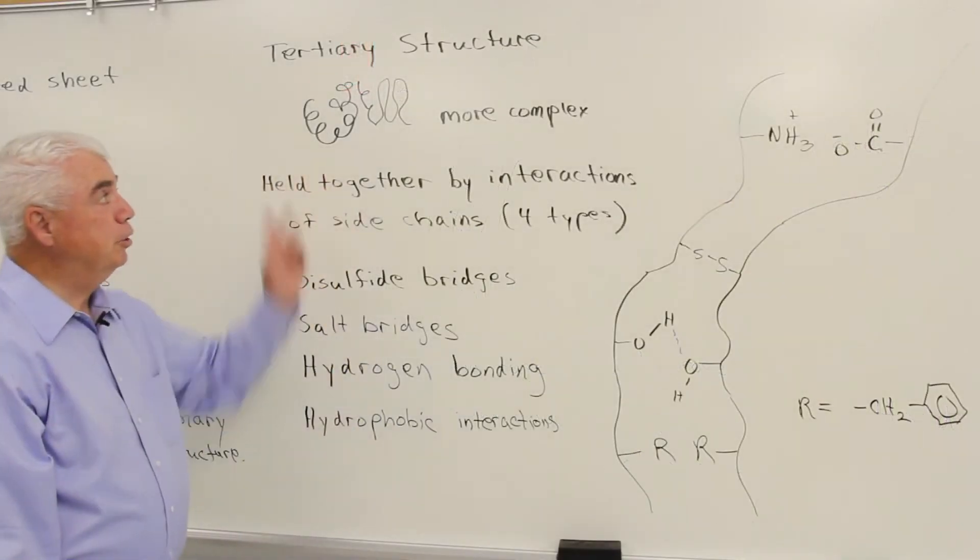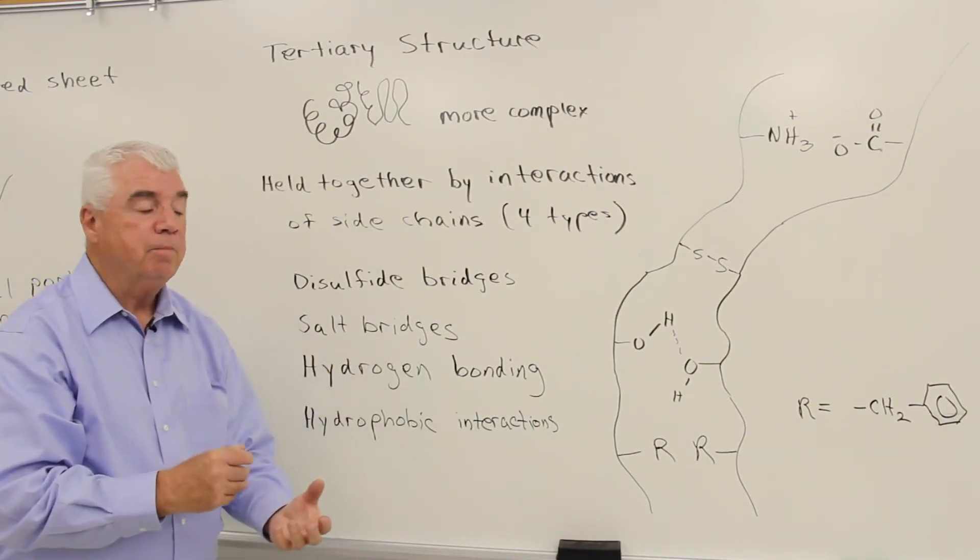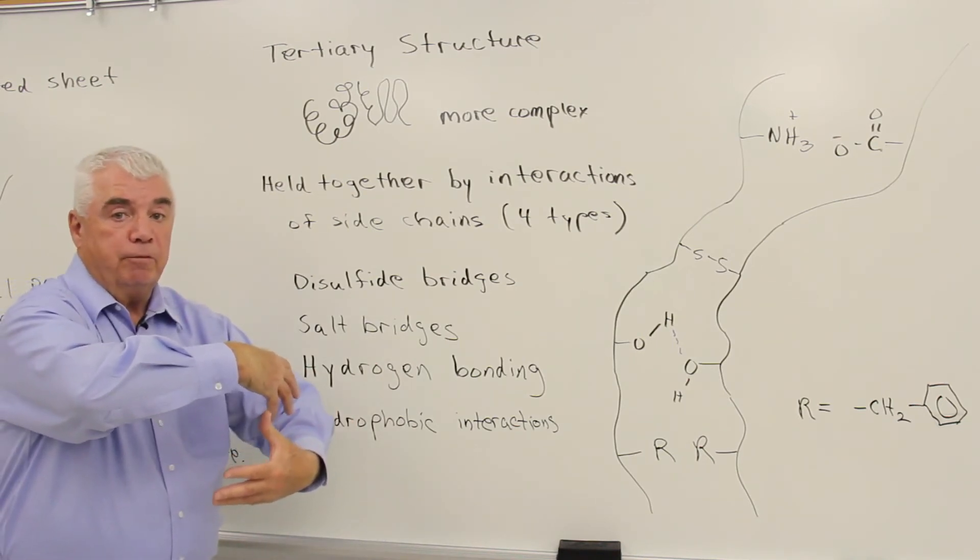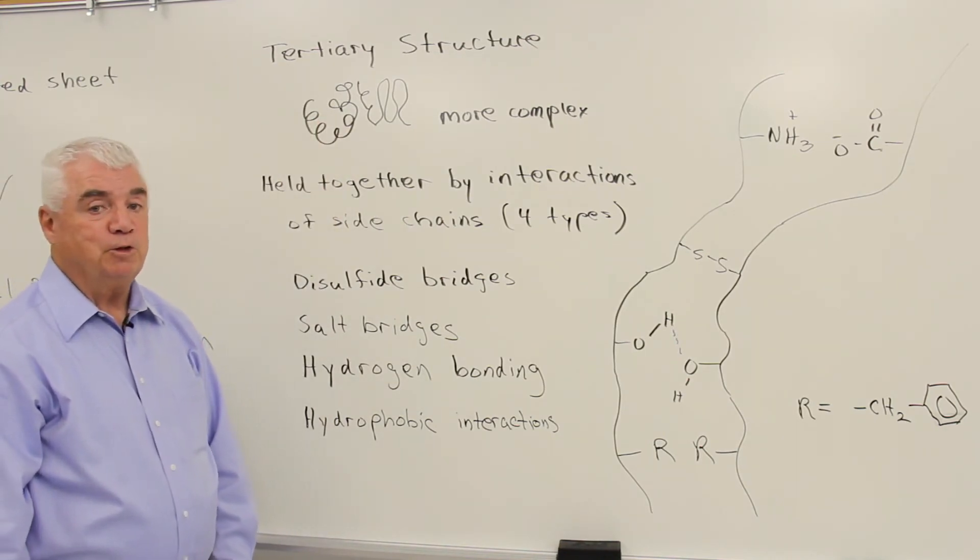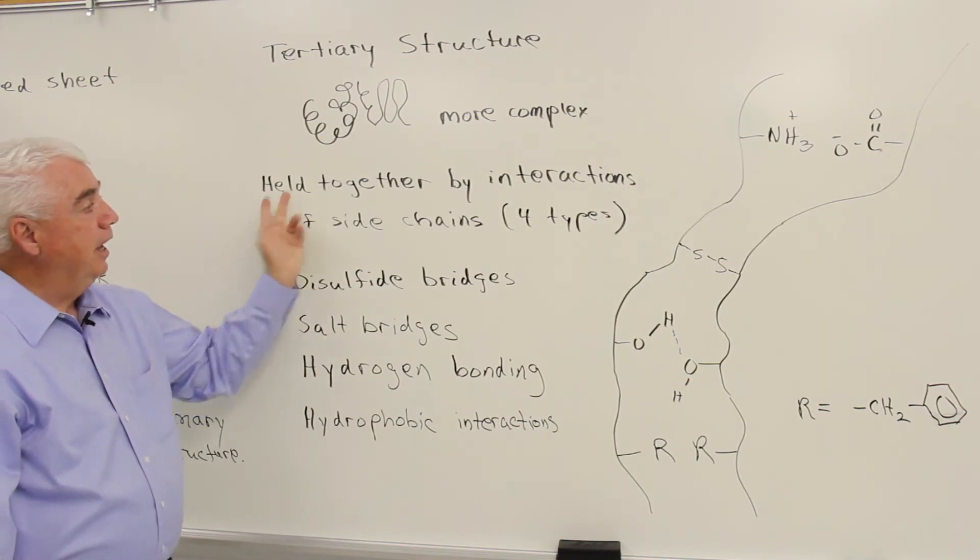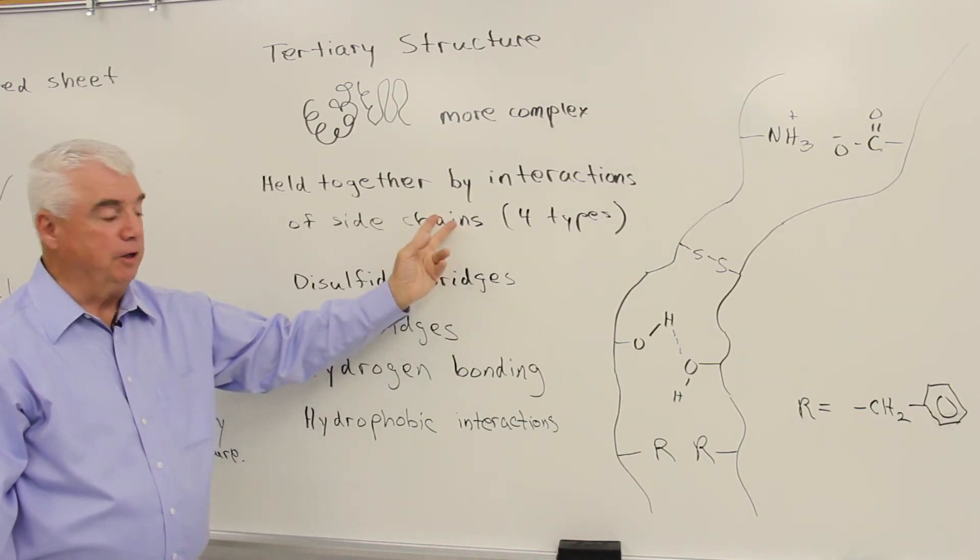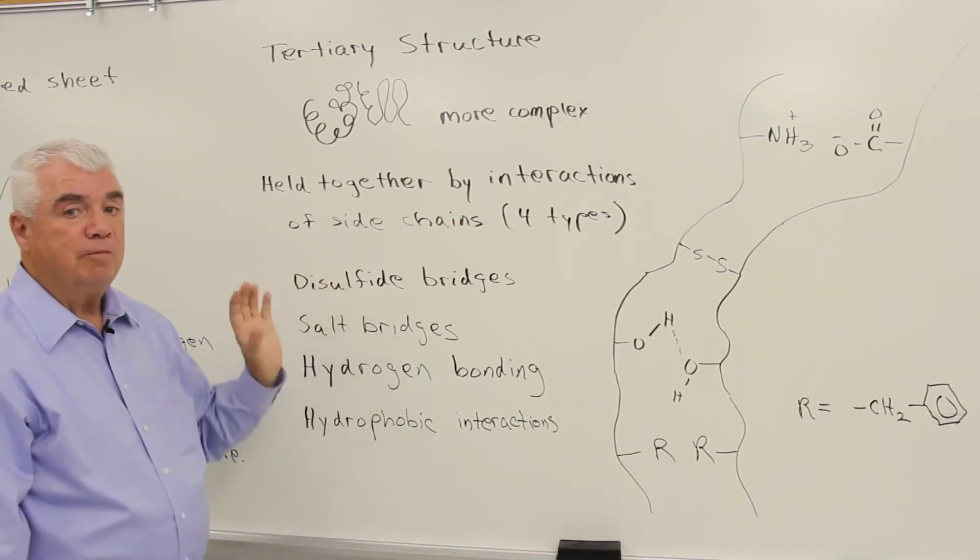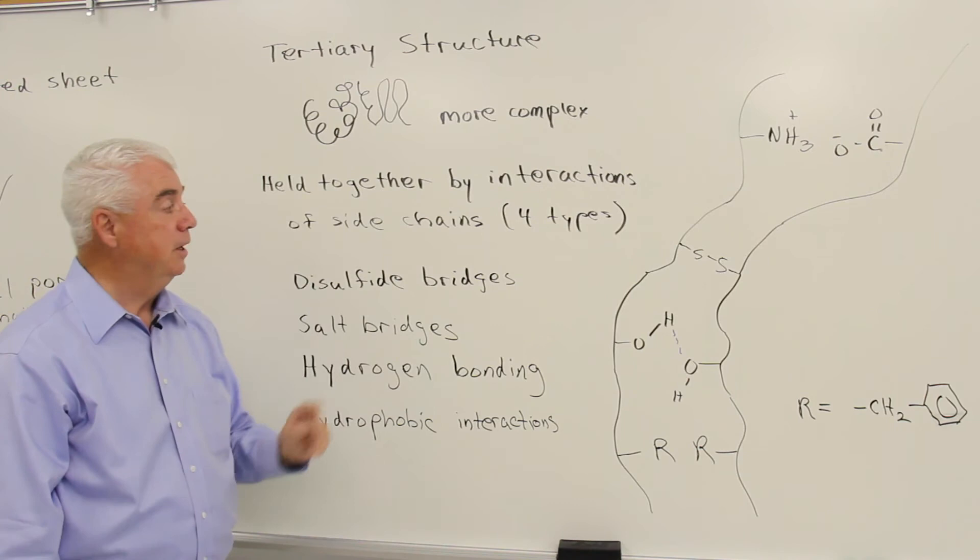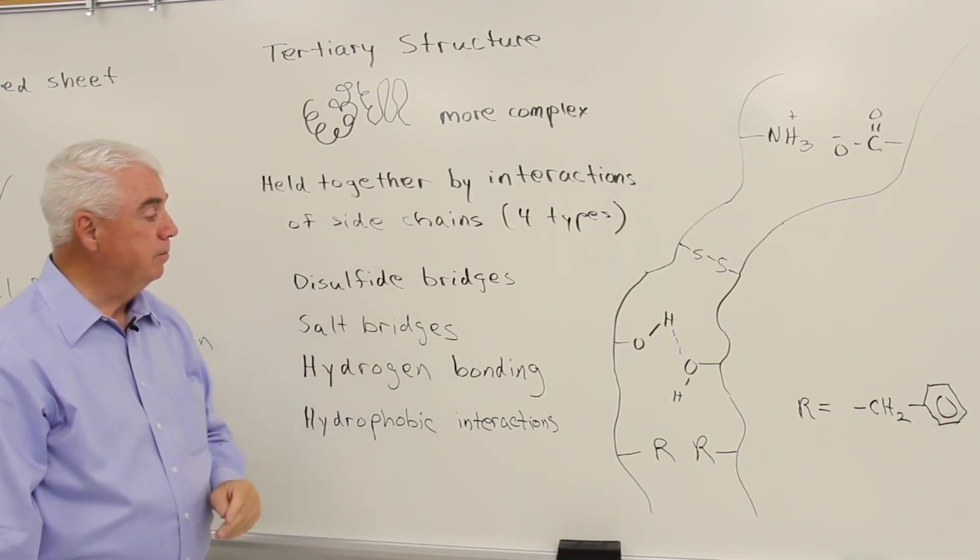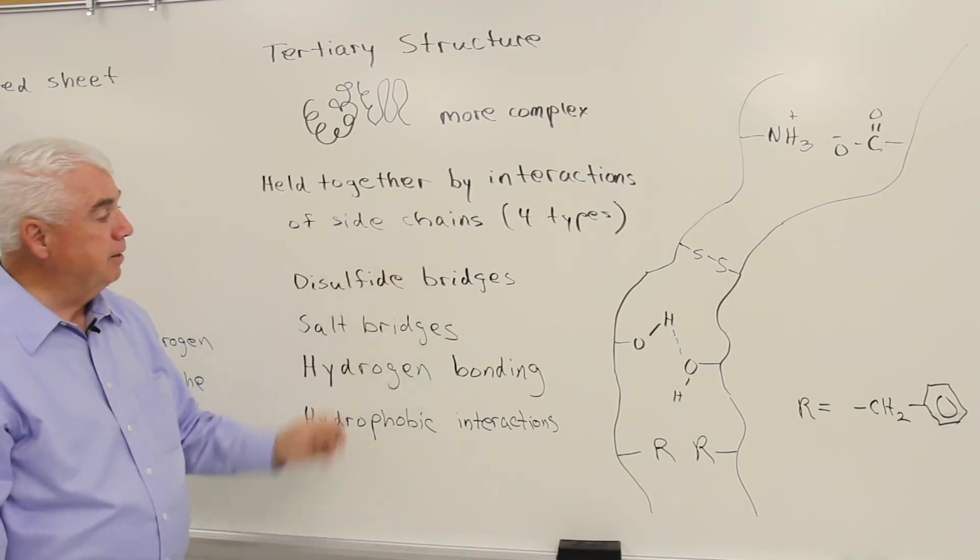Let's look at tertiary. Tertiary structure is even more complex. If you envision this helical protein now gathered together in some sort of three-dimensional, almost globular structure, held together by various forces, that would be a tertiary structure. And the forces in this case are through side chain interactions. Remember, primary was linking amino acids together. Secondary, hydrogen bonds between amide linkages. But here we're involving the side chains. And there are four kinds of these forces.